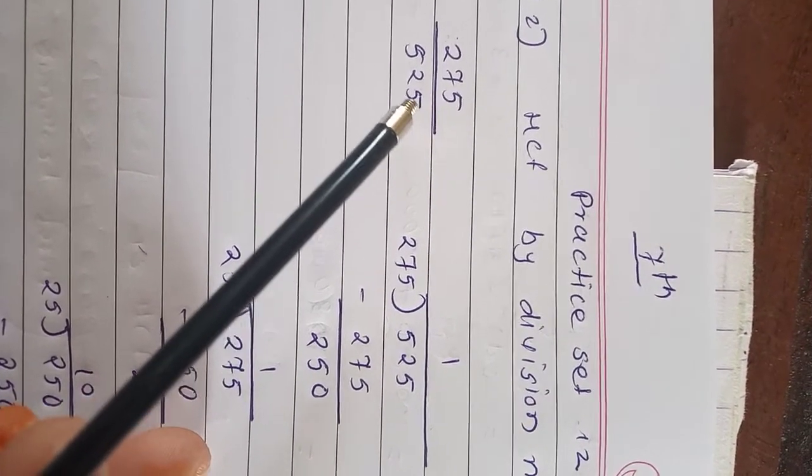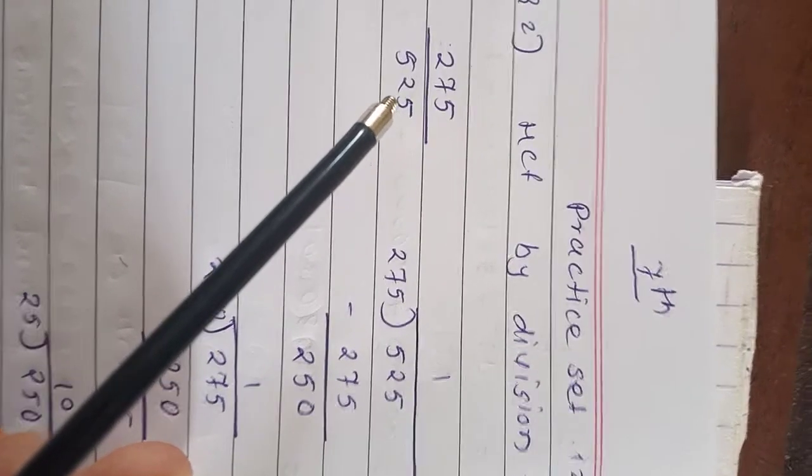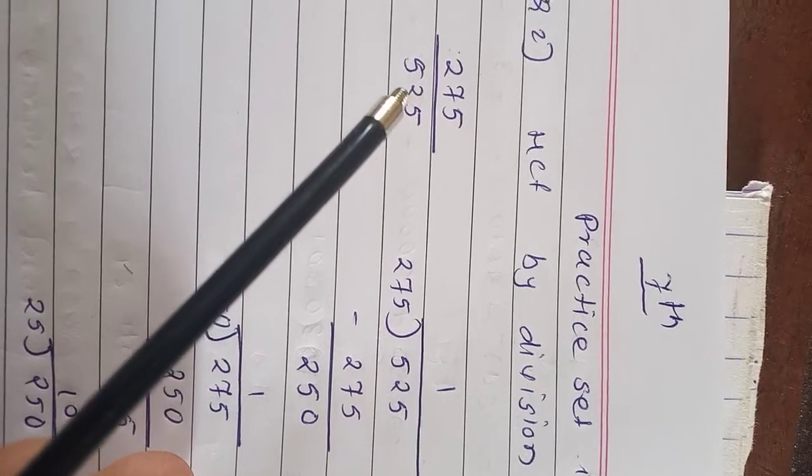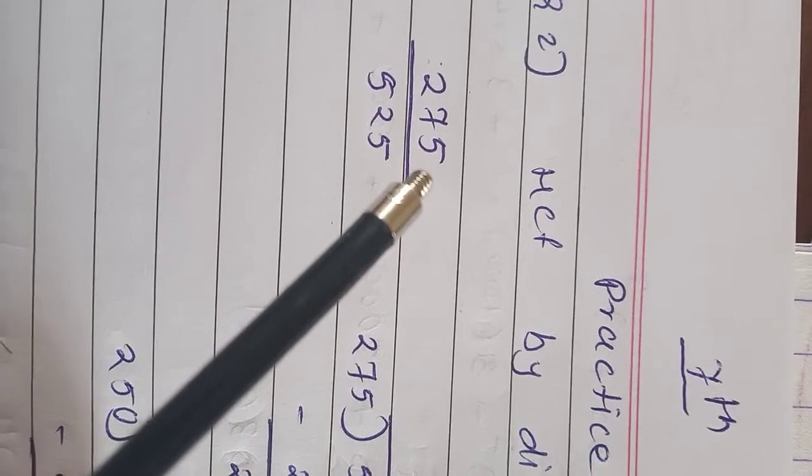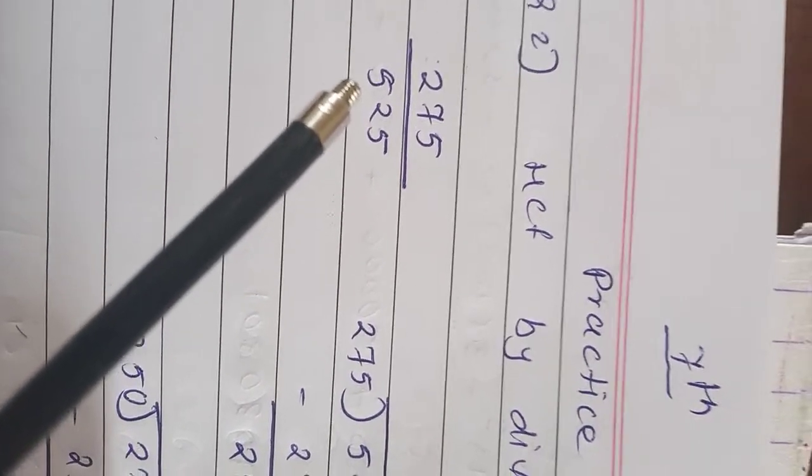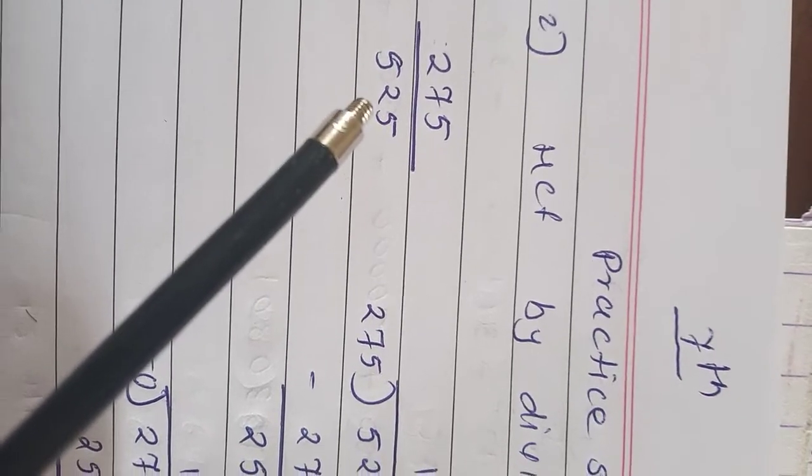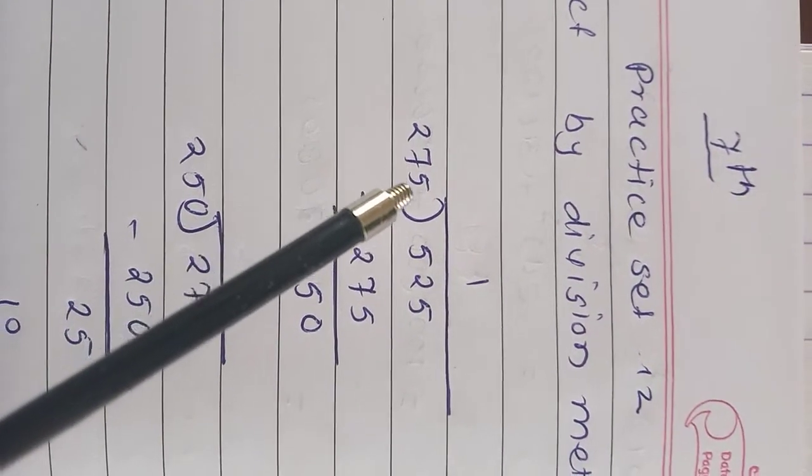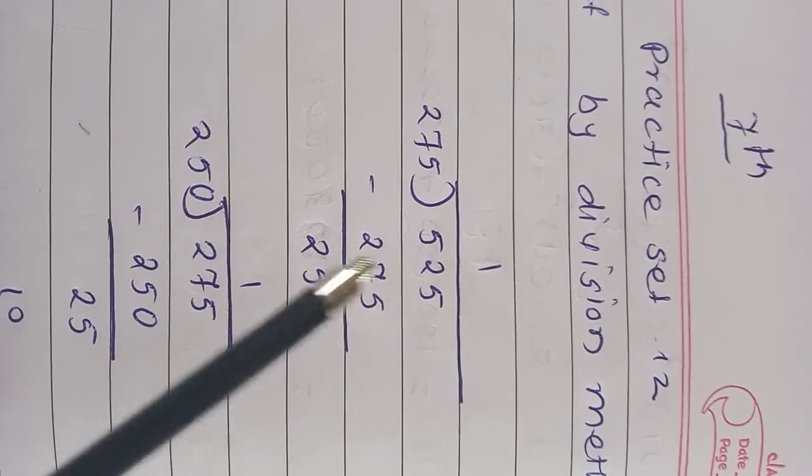So 275 upon 525. In this division method we have to divide the greater number by smaller number. So greater number is 525 and smaller number is 275. So 275 is a divisor and 525 is a dividend. So 525 divided by 275. So 275 ones are 275.